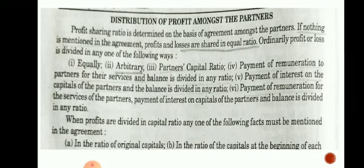Arbitrary means based on equality and preference — the partner which puts in extra effort and extra work will get more. Partners' capital ratio means the partner which invests more money will get more profit.